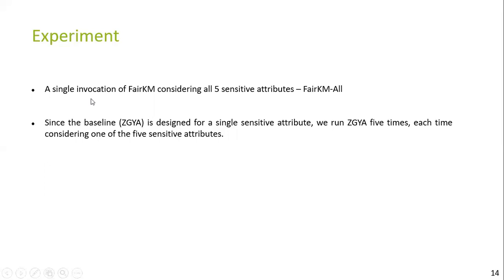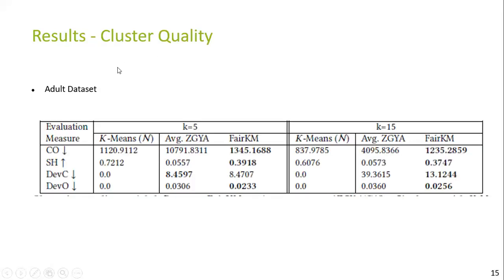We describe only the major results in this presentation. The experiment compares Fair KM with ZGYA. Fair KM is instantiated considering all five sensitive attributes, hence it is denoted as Fair KM All. Since ZGYA is designed for a single sensitive attribute, we run ZGYA five times, each time considering one of the five sensitive attributes. Hence, this is a synthetically favorable setting for ZGYA, because Fair KM focuses on creating clusters that are fair with respect to all five sensitive attributes, whereas ZGYA focuses on fairness of one sensitive attribute at a time. We show the results on the Adult dataset; trends are similar for the Kinematics dataset as well.